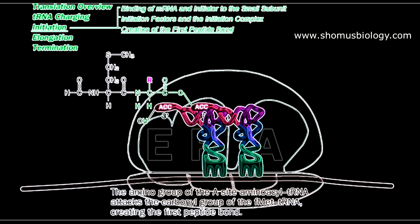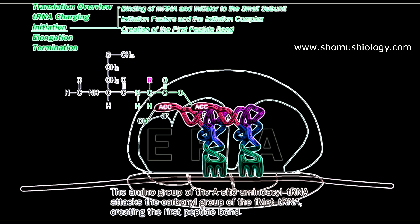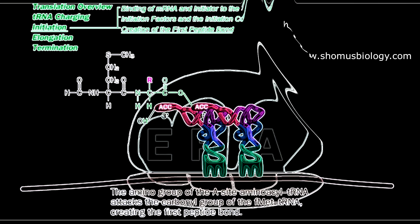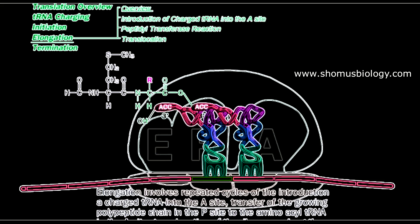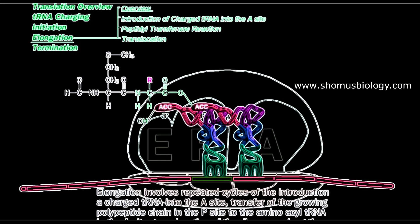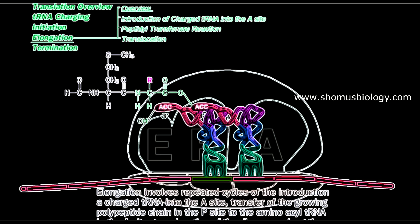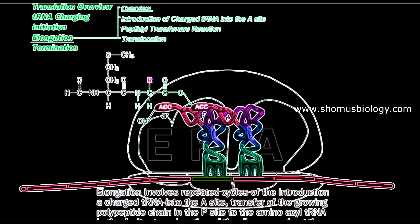This peptide bond formation is catalyzed by the large ribosomal subunit — it is a ribozyme activity. For elongation, the ribosome moves along the mRNA from 5 prime to 3 prime direction, one codon unit at a time. Whatever is in the P site is transported to the E site, whatever is in the A site is transported to the P site, and the A site becomes free to accept a new aminoacyl tRNA.